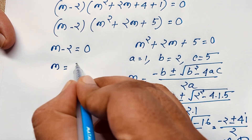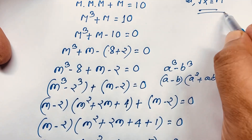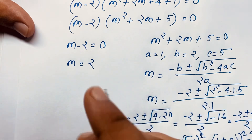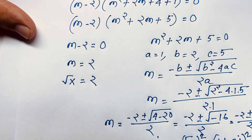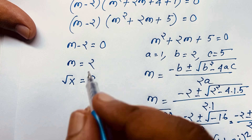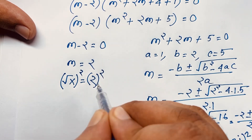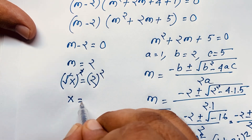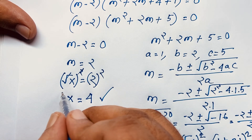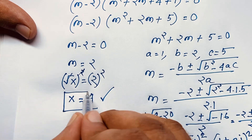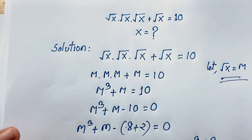From the first case, m minus 2 equals 0, so m equals 2. Recall that m equals square root x, so square root x equals 2. Squaring both sides, the square root cancels and we find x equals 2² equals 4. Our real solution and final answer is x equals 4.